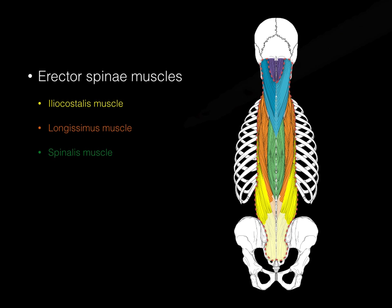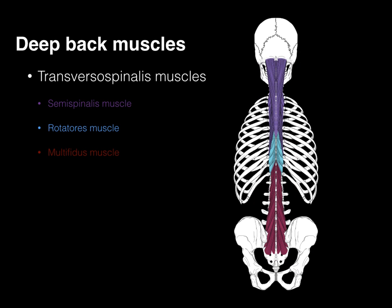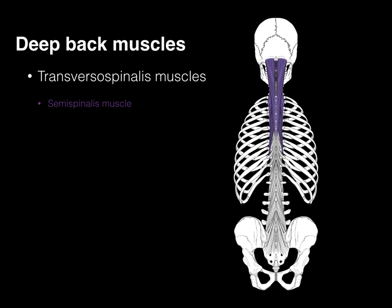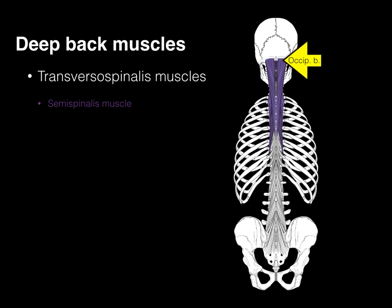Now let's cut away the erector spinae muscles to reveal the deeper transversospinalis muscles. These muscles — semispinalis, rotatores, and multifidus — get their name because they arise from the transverse process and attach to a superadjacent spinous process. Starting with the semispinalis: it arises from a transverse process and spans four to six vertebrae to attach to a superadjacent spinous process. The upper fibers course all the way up to the occipital bone — hence the name semi, as it's partially on the spine and partially on the skull.